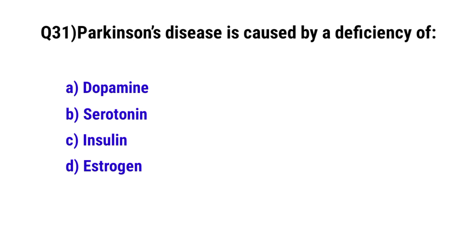Question No. 31: Parkinson's disease is caused by a deficiency of? The correct option is A: Dopamine.